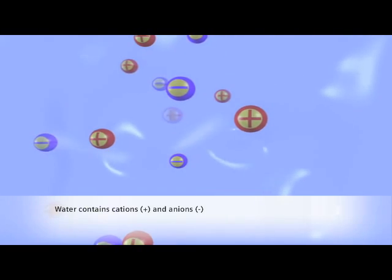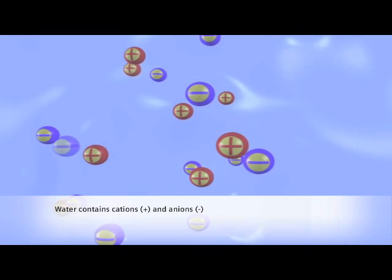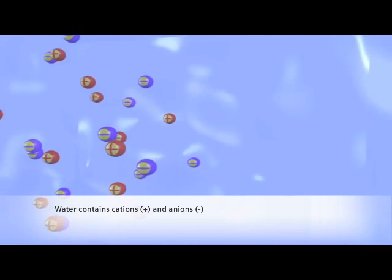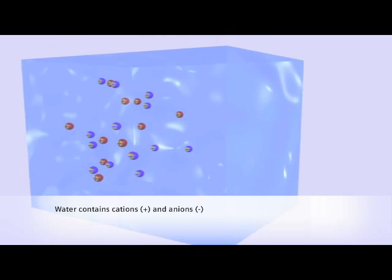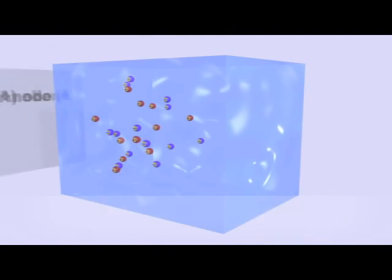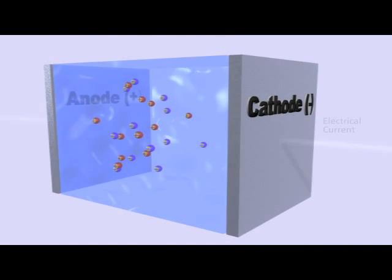let's go down to the molecular level and take a look at some water containing ions. Water contains positively charged cations, represented by plus signs, and negatively charged anions, represented by minus signs. When a pair of electrodes is inserted and an electrical current applied,